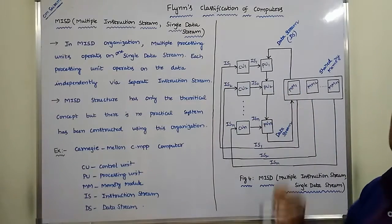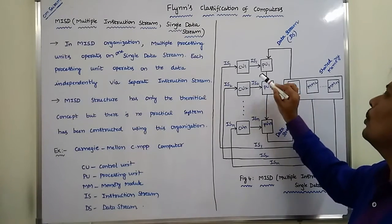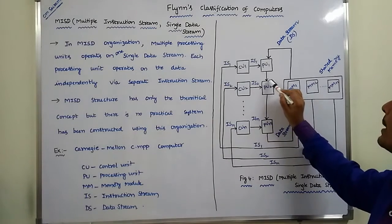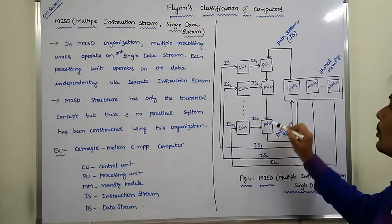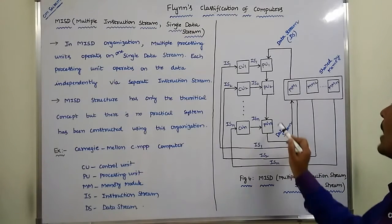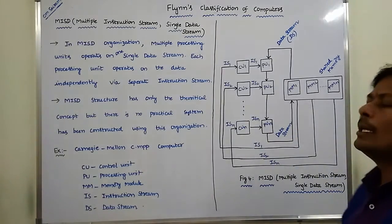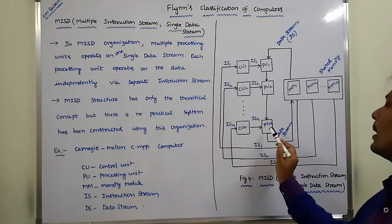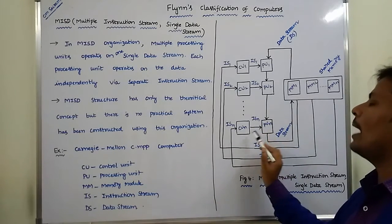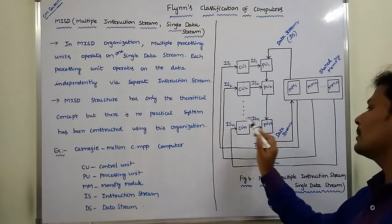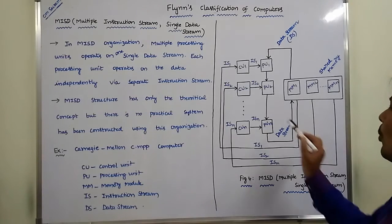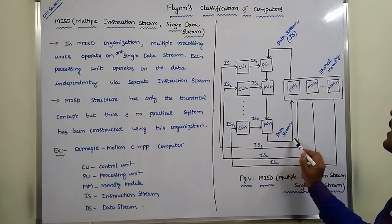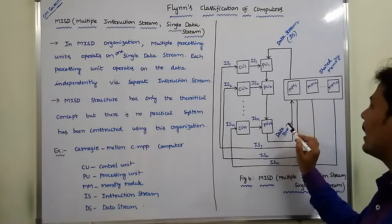Processing unit 2 executes its instructions with the received input. Whatever output we get from processing unit 2 is sent to the next processing unit, PUN. PUN takes the data from processing unit 2 as one input, and another input is instruction stream N read by control unit N from its corresponding memory module. Whatever output we get from processing unit N is sent to the shared memory unit as a data stream.